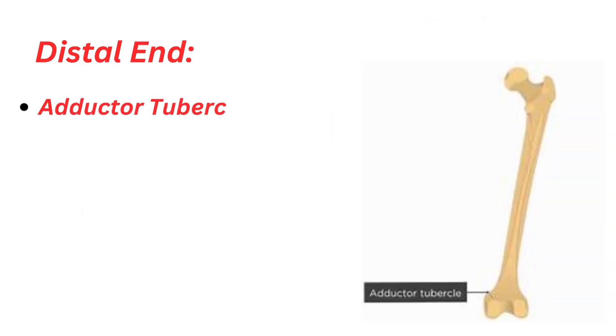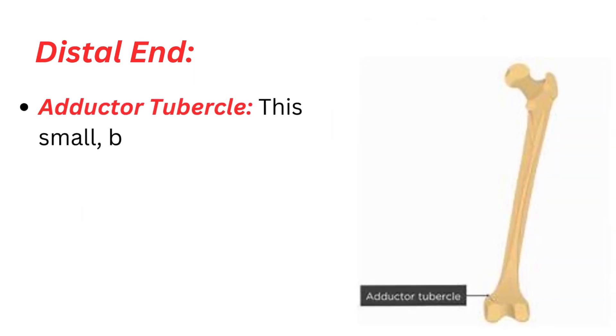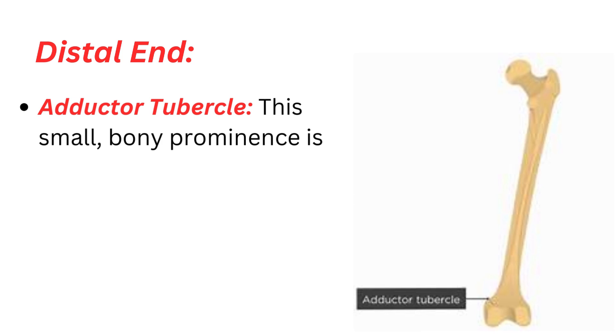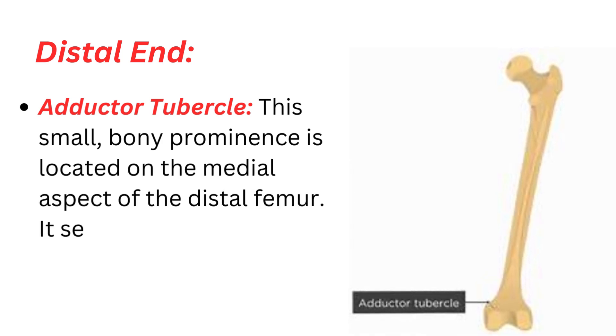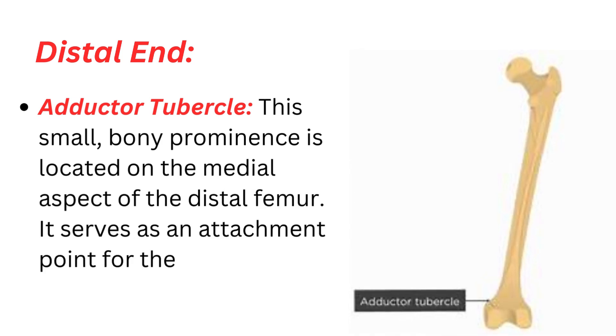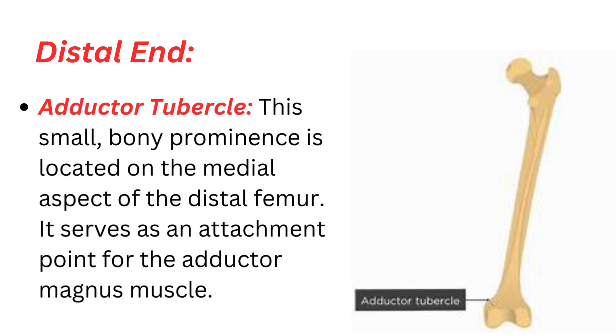Adductor tubercle: this small, bony prominence is located on the medial aspect of the distal femur. It serves as an attachment point for the adductor magnus muscle.